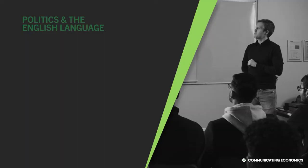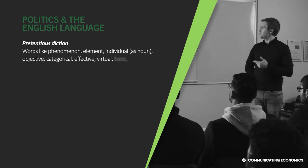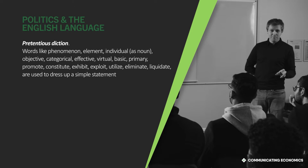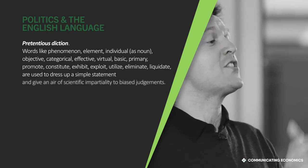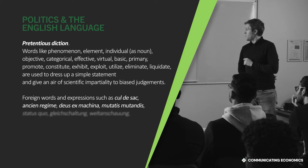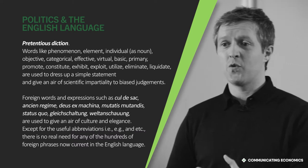This is an old ancient text you found here. You might be wondering whether it's relevant to you today. It rallies against pretentious diction. It says words like phenomenon, element, individual, objective, categorical, effective, virtual, basic, primary, promote, constitute, exhibit, exploit, utilize, eliminate, liquidate — are used to dress up a simple statement and give an air of scientific impartiality to biased judgements. I want you to hold that thought about giving an air of scientific impartiality, dressing up simple statements to disguise biased judgements. It also rallies against foreign words and expressions — the hundreds of phrases currently used in the English language — again, to try and disguise what people really mean.